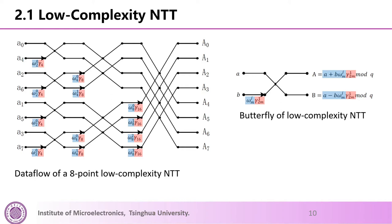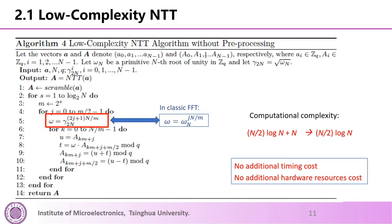The left figure shows the data flow of an eight-point low-complexity NTT — preprocessing is not required anymore. The right figure shows the butterfly of the low-complexity NTT. The differences from the classic DIT FFT are in the twiddle factors: blue parts are the same as FFT, red parts are the differences. Because gamma sub 2m is the square root of omega sub m, only N powers of gamma need to be pre-computed and stored. This eliminates the modular multiplications of preprocessing, reducing NTT complexity from (N/2)·log N + N to (N/2)·log N, with no additional timing or hardware resource cost.